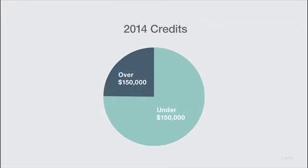With credits it was the same story — about three quarters went to filers under $150,000.